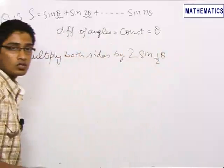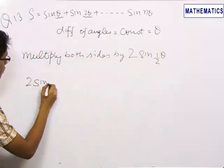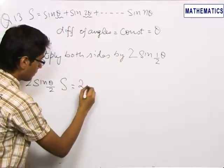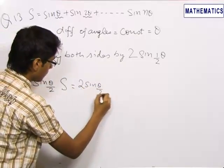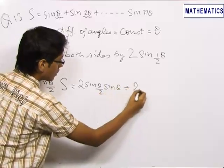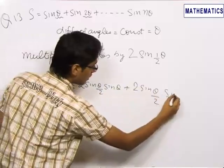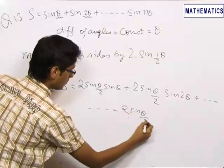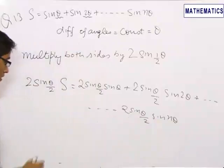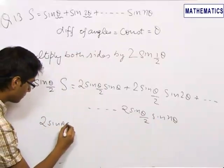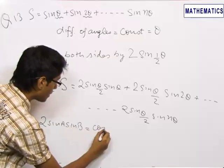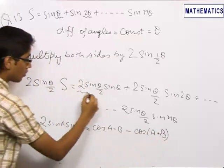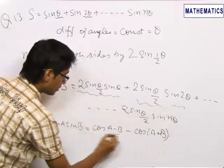So we multiply both sides by 2·sin(θ/2). This becomes 2·sin(θ/2) × S, expressed as a sum of 2·sinA·sinB terms. This format will continue for all terms up to the last term. We know that 2·sinA·sinB = cos(A − B) − cos(A + B), so we can convert all these products into this difference-of-two-terms form.